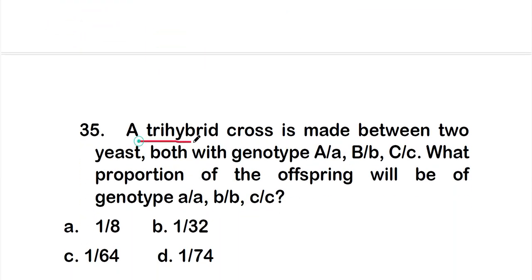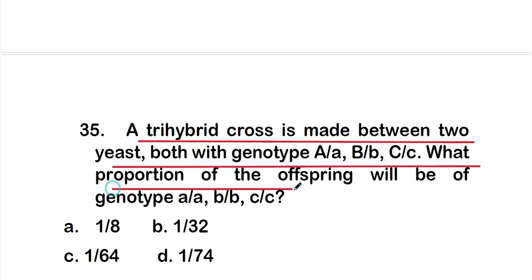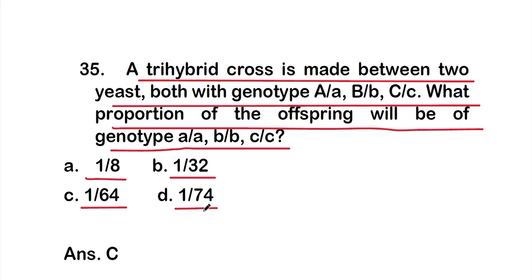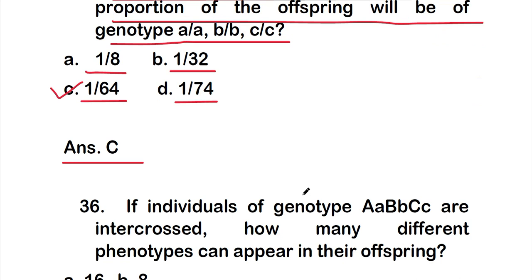Question 35: A trihybrid cross is made between two organisms both with genotype AaBbCc. What proportion of offspring will be of genotype aaBBcc? Options are 1/8, 1/32, 1/64, or 1/74. The right answer is option C — 1/64.